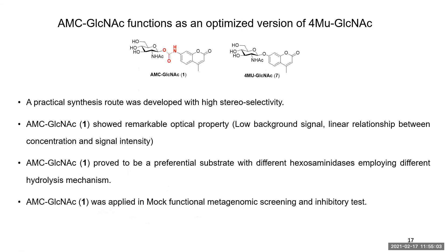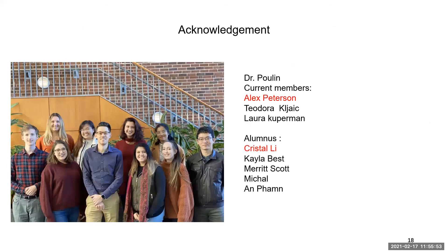In summary, we designed AMC GlcNAc as an optimized version of 4-MU GlcNAc, developed a practical synthesis route with relatively high stereoselectivity, and found that AMC GlcNAc shows excellent optical properties with low background signal, easy quantification, and real-time measurement capability. Compound 1 proved to be a preferred substrate for different beta-hexosaminidases employing different hydrolysis mechanisms. We directly applied AMC GlcNAc in HTS screening and inhibitory testing with ideal results. I would like to thank Dr. Poulin, my co-workers, and special thanks to Alex Peterson and Crystal for their help with expression and testing.